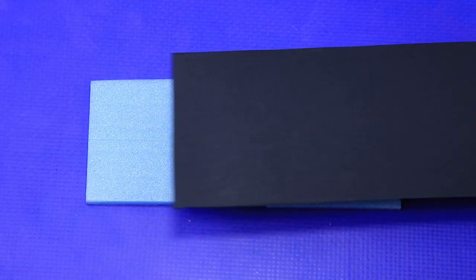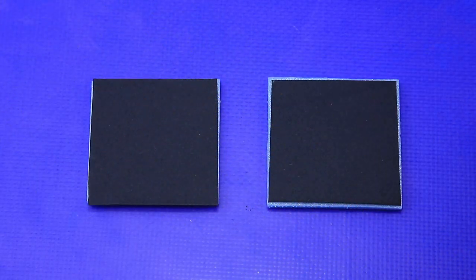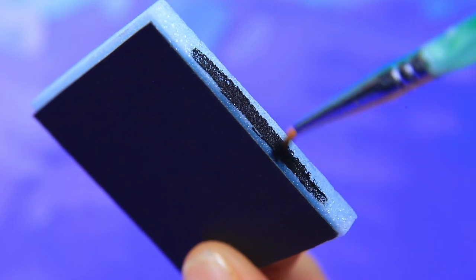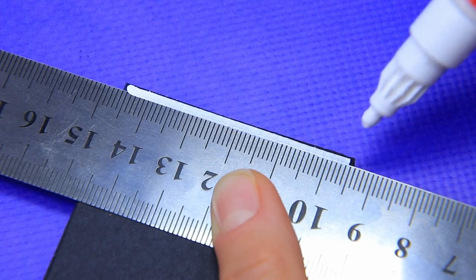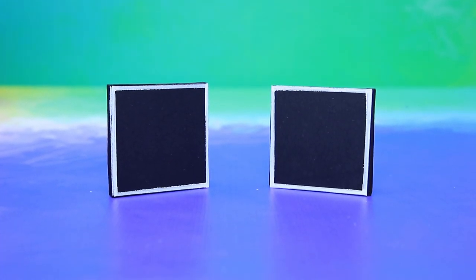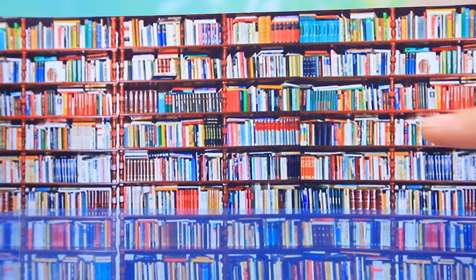Cover squares out of styrofoam with cardboard displays. Decorate with white frames. Displays are hung in the home library.